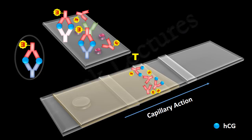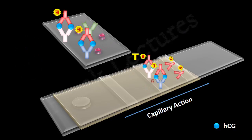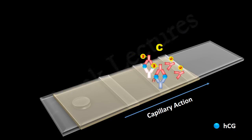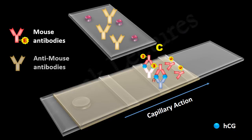The free anti-HCG antibodies of the reaction zone continue to move further in the strip by capillary action. The free or unbound reaction zone antibodies arrive at the control zone. We know that reaction zone antibodies are also known as mouse antibodies. In the control zone, anti-mouse antibodies are present which recognize and bind the Fc region of the mouse antibodies.